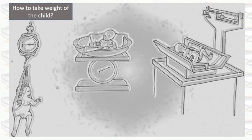There are different scales available for different age groups of children. Set the scale at zero, remove the child's clothes but keep the child warm with a blanket. Place the child gently in the pan, wait for the child to settle and stabilize. Measure weight to the nearest 0.01 kilogram. If measuring the child with clothes, measure the child with clothes, then take the separate weight of the clothes and subtract it from the total weight to get the child's weight.